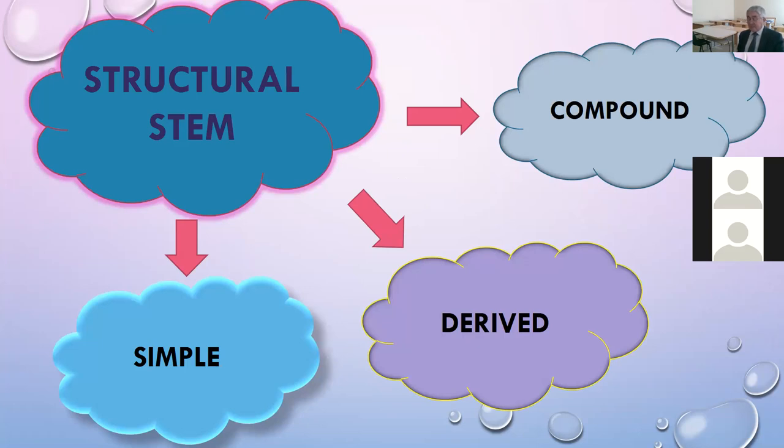A derived stem is a stem which can be divided into a root and affixes. For example, girl, girlish, agree, agreement, accept, acceptable, teach, teacher. But derived stems are not always polymorphemic.